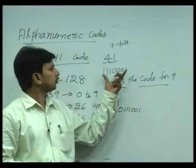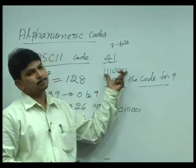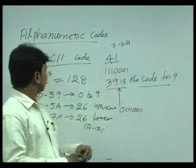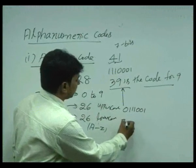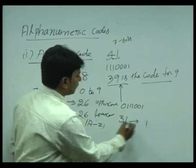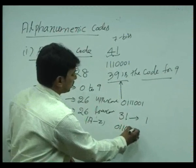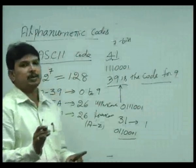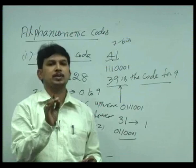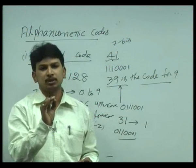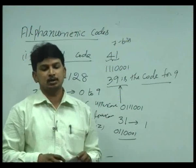If you want to transmit the alphabetical A, then you have to use this code. If you take 3 1, then 3 1 is the code for 1. So 3 as it is 0 1 1 and 1 is 0 0 0 1. So 7 bits means the first part is represented as 3 bits and the second part is represented as 4 bits.